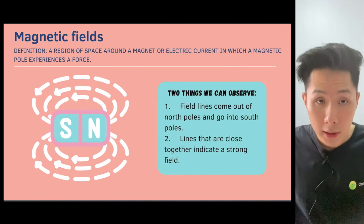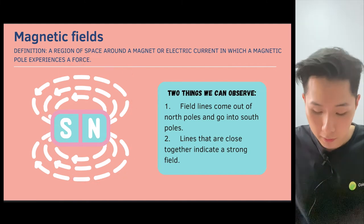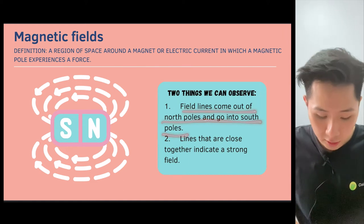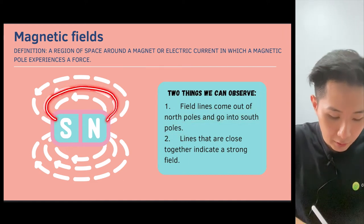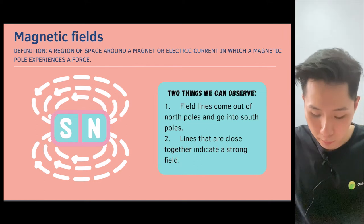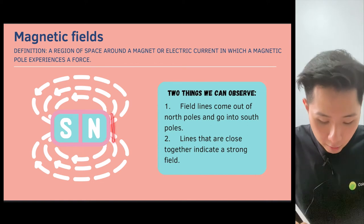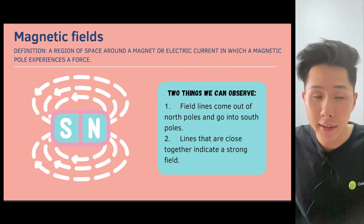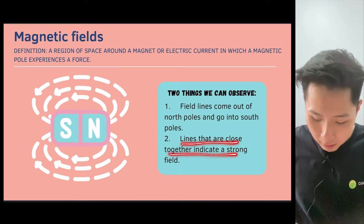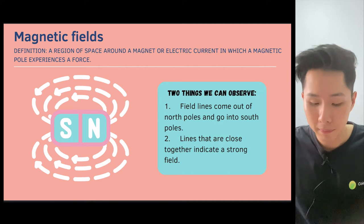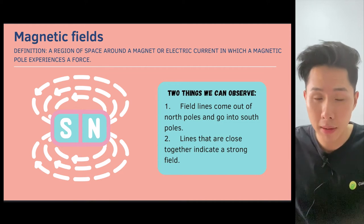There are two things we can observe from a magnetic field. First, the field lines come out of the north pole and go into the south pole — you can see the arrows pointing from north to south. We also notice that there are areas where the magnetic field lines are very close to each other, which represents a concentrated and stronger magnetic field. Lines that are closer together represent a stronger field, meaning they can attract heavier or bigger objects.